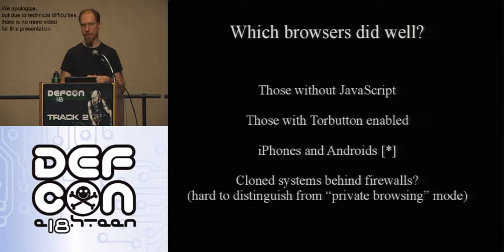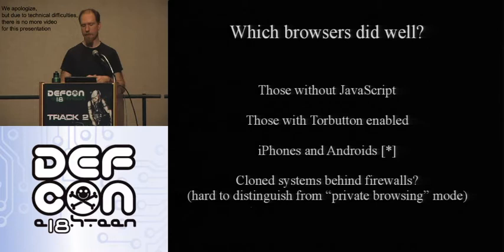If you use an iPhone or an Android and you manage the cookie problem, you're in pretty good shape. And lastly, a small percentage of systems behind firewalls appeared to have the same fingerprint. We saw about 3% of IP addresses with multiple visitors exhibiting that kind of behavior. That 3% maybe has some anonymity, though it's hard to distinguish from private browsing mode. And if you implemented clock-skew hardware-based fingerprinting, you could probably tell people apart even with a firewall and a cloned fingerprint.